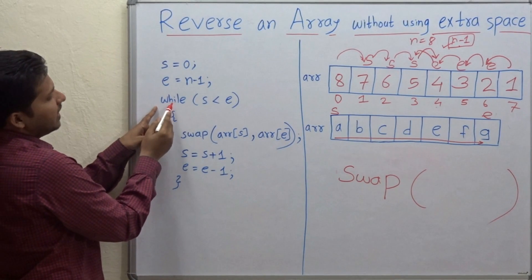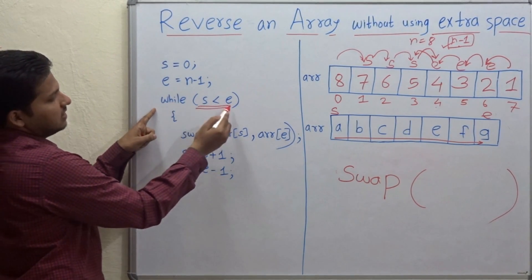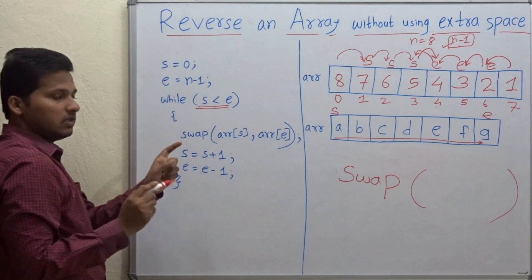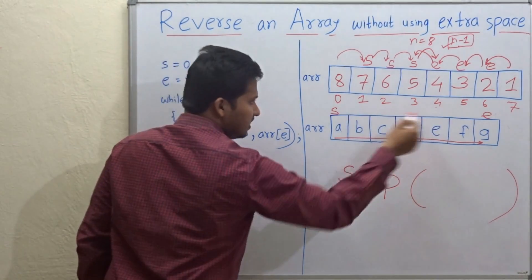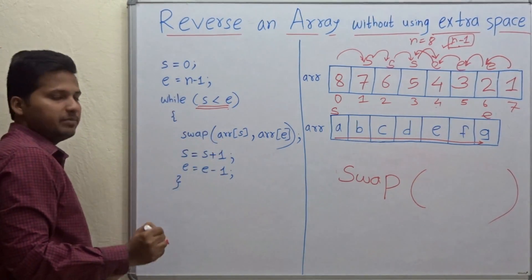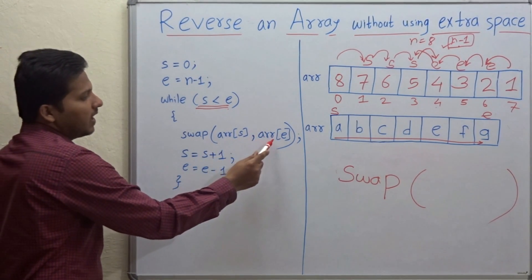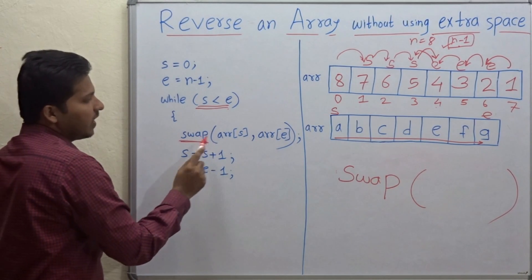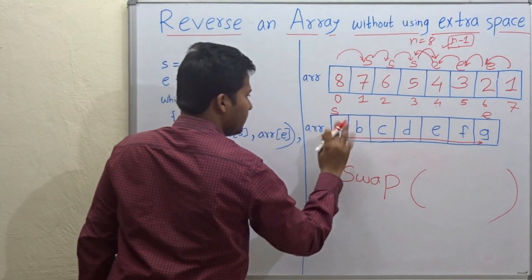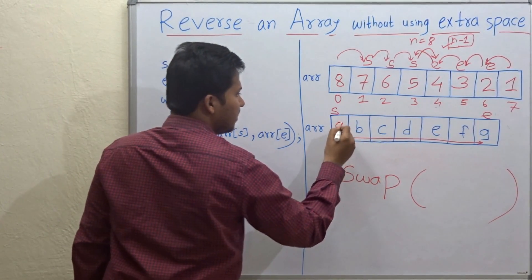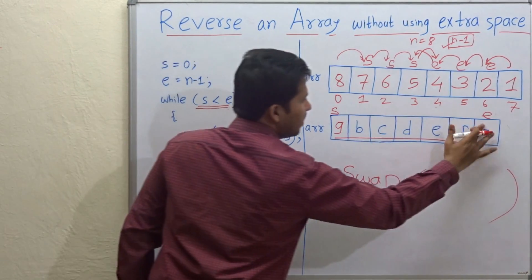While S is less than E, so till S is less than E, we have to do these steps. So swap array of S comma array of E. So we will swap these 2 positions. So G will come here and A will go there.